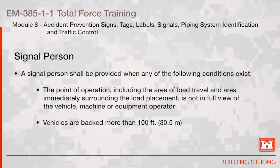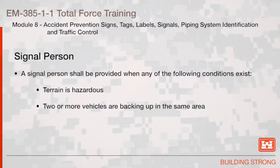A signal person shall be provided when any of the following conditions exist: the point of operation, including the area of load travel and area immediately surrounding the load placement, is not in full view of the vehicle, machine, or equipment operator; vehicles are backed more than 100 feet; the terrain is hazardous; or two or more vehicles are backing up in the same area.